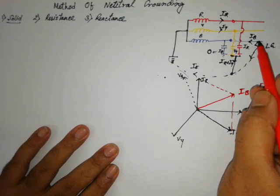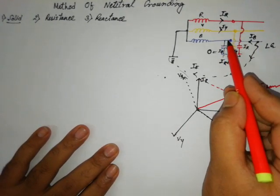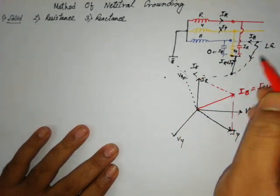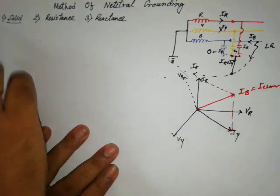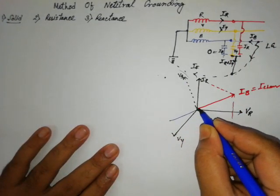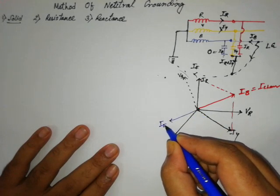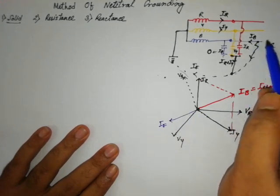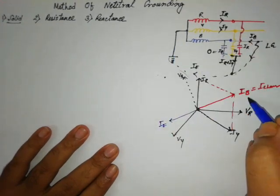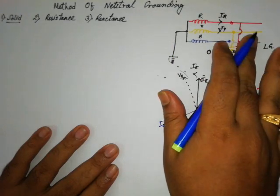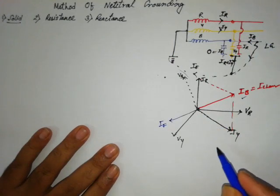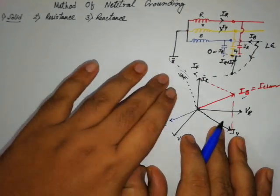This is IB, or rather this is the charging current. The direction of the charging current IB is in that direction. Obviously the fault current is flowing in that direction, so we can represent the fault current in that direction. We always assume the fault current flows in that direction. From the phasor diagram we have evaluated IB, so obviously the fault current will be in 180 degree phase difference with IB. This is the phasor diagram for a solidly grounded system. In a solidly grounded system, the resistance of the grounding path must be zero.